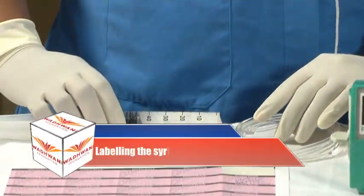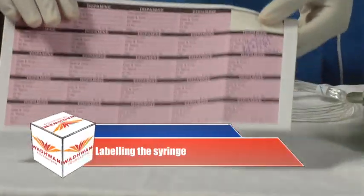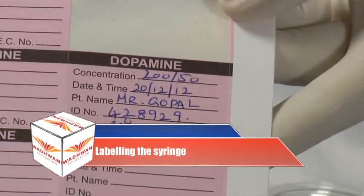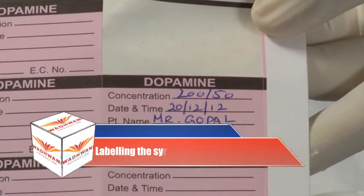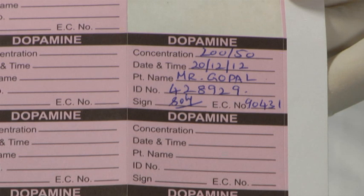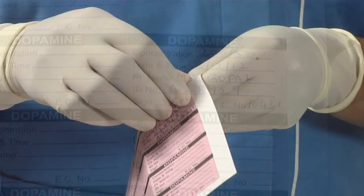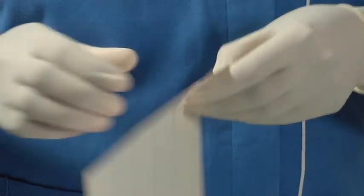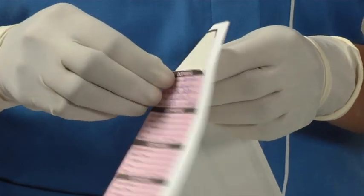Labeling of the syringe is very important to make sure the drug, the dosage, and the patient are clearly spelled out. The label says dopamine drug is being given, and displays the concentration, date and time, and the patient name. This label is written out, and then stuck to the syringe, in a visible area.